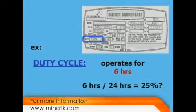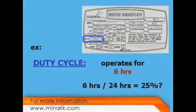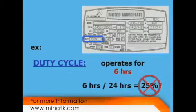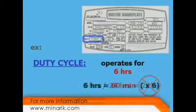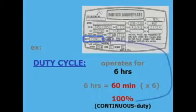For example, if a motor will need to run six hours in a 24-hour day, some might think it could be rated at 25% duty cycle. However, since the motor will run for at least 60 continuous minutes, it needs to be rated 100% or continuous duty.